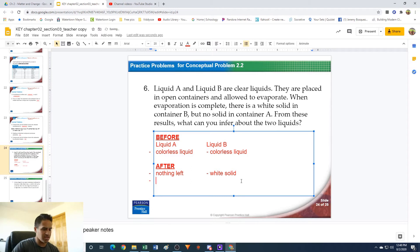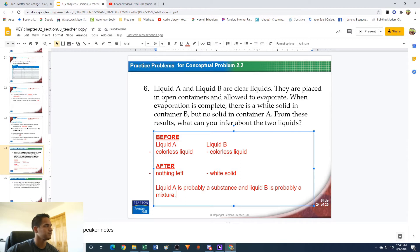So we're going to say that liquid A is probably—I'm going to say probably, we don't 100% know—but probably a substance. And liquid B is probably a mixture. Hopefully that makes sense, but if you have questions, let me know.